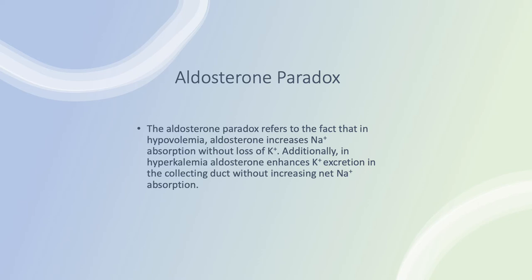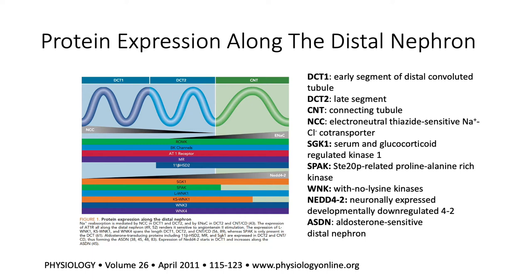In summary: in hypovolemia, aldosterone increases sodium absorption without loss of potassium; and in hyperkalemia, aldosterone enhances potassium excretion without an increase in net sodium reabsorption. This is the aldosterone paradox in two words.